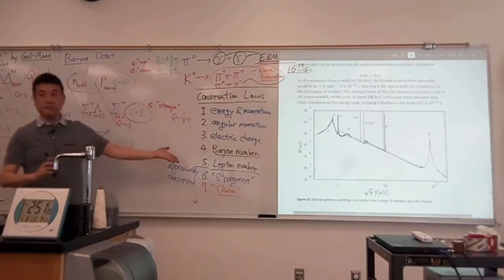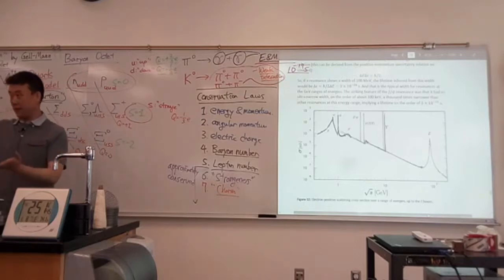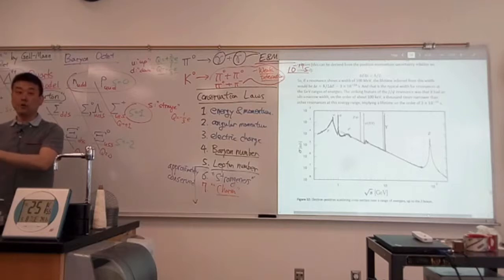So conservation of charm means now that, you know, to get rid of that charm requires another charm-violating process that takes longer. That means longer lifetime. So from energy, time, uncertainty principle, which I never really covered in this class, means these are more longer-lived, become more longer-lived particles.